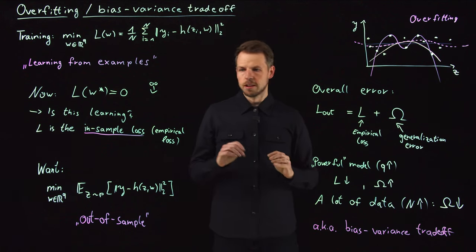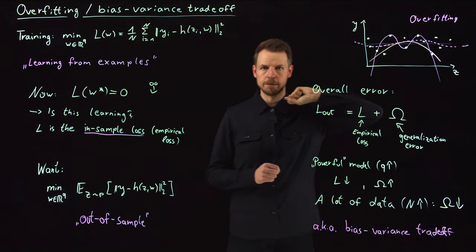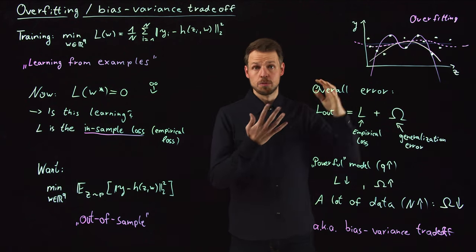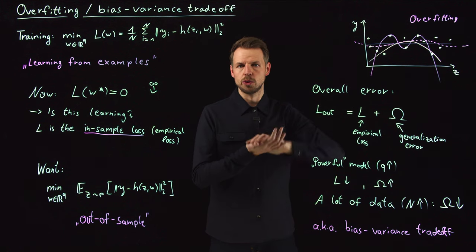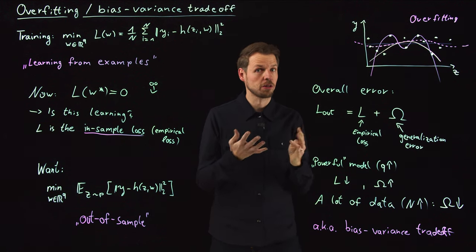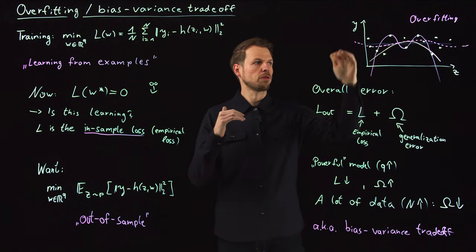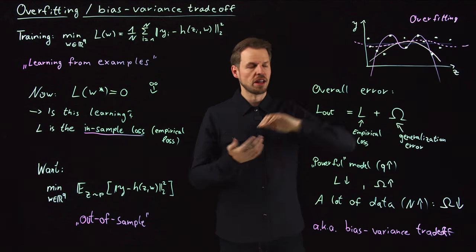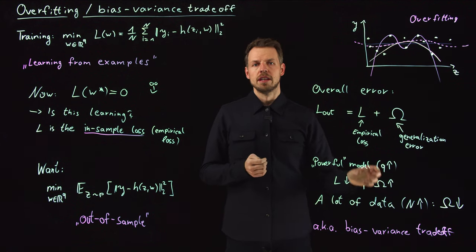So what do I mean by this? If you take a simple model, let's say this blue line, you have a large bias because it is not possible to fit closely to your data set. It simply is not possible. Your model is not strong enough. So you have an inclusive bias - regardless of how you train it, you will always have a rather large loss.